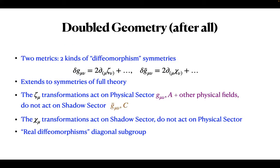A question: do the A and C fields have the same chirality or opposite? They're the same chirality but with respect to different metrics—one is self-dual with respect to G and one with respect to ḡ. If you specialize to flat space they would have the same chirality. So they're both self-dual or both anti-self-dual, with respect to metrics which could be different.